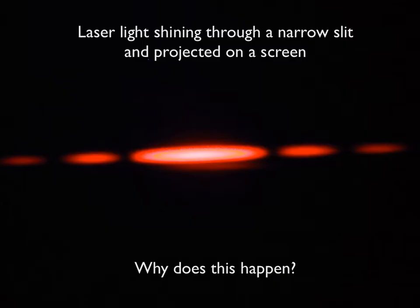If you shine a laser through a narrow single slit and project the light onto a screen, a pattern of light and dark bands or spots will be projected onto the screen. This is an interference pattern. The bright band in the middle is called the central maximum, and the dark spots on either side of the central maximum are called the first minima.